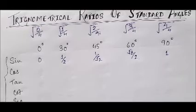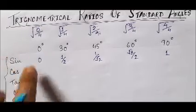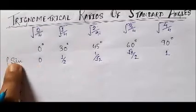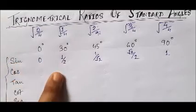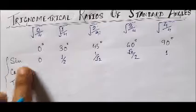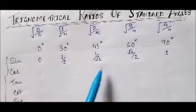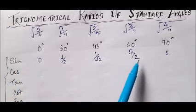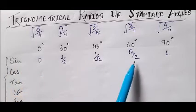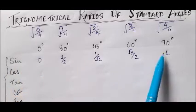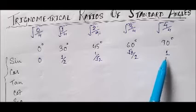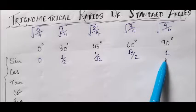So we get: sin 0 degree = 0, sin 30 degree = 1/2, sin 45 degree = 1 by root 2, sin 60 degree = root 3 by 2, and sin 90 degree = 1.